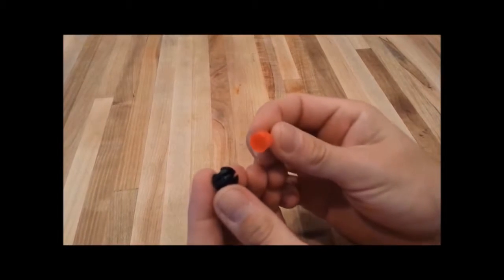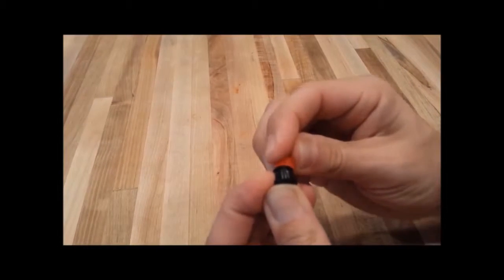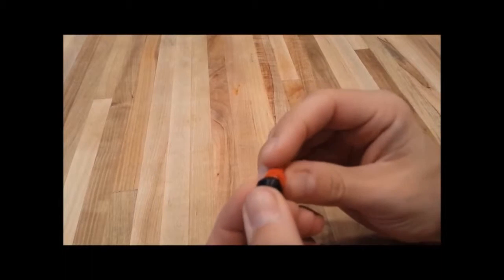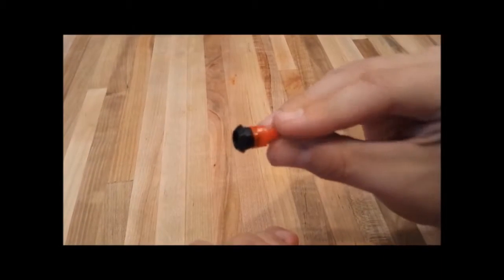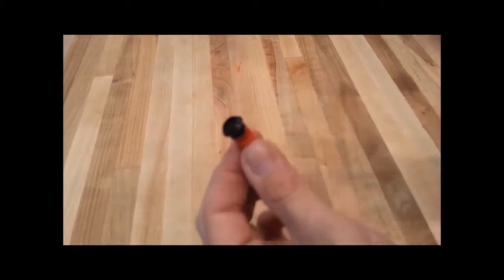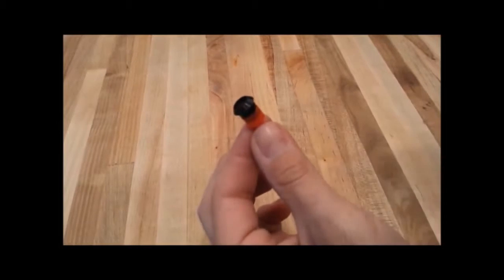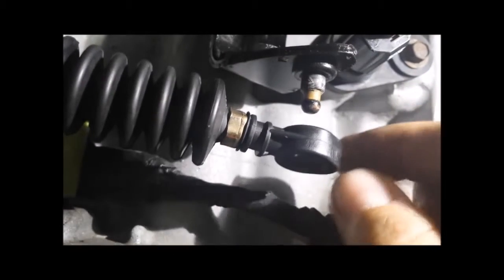Start by taking the bushing and pushing it into the installation tool like this. After you remove all of the old bushing, if there's any left from the transmission cable, it should look like this.